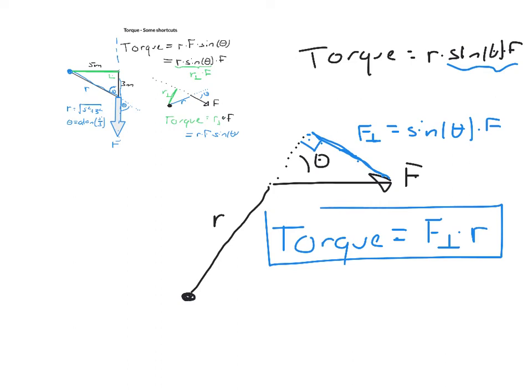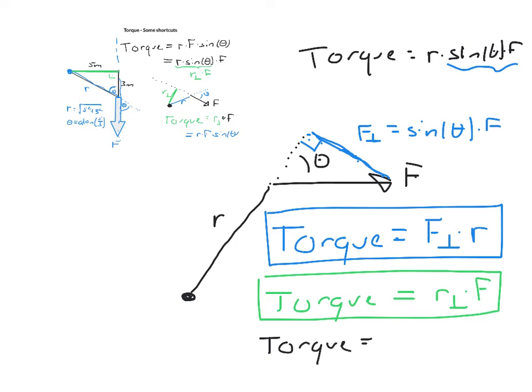So this is one shortcut formula. And the other one from before is r perpendicular times F, which adds to our general equation. Just torque is r times F times sine of the angle.